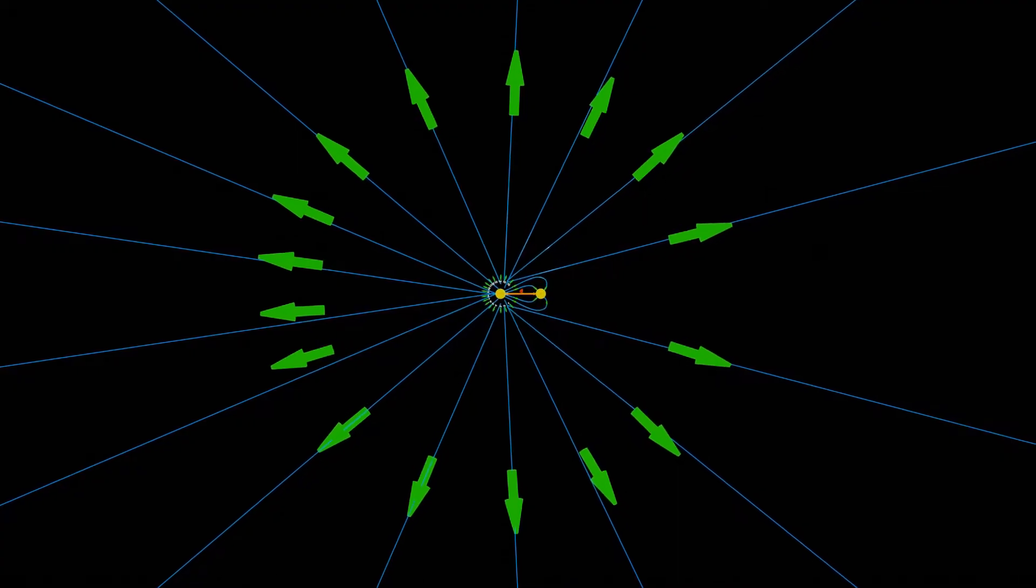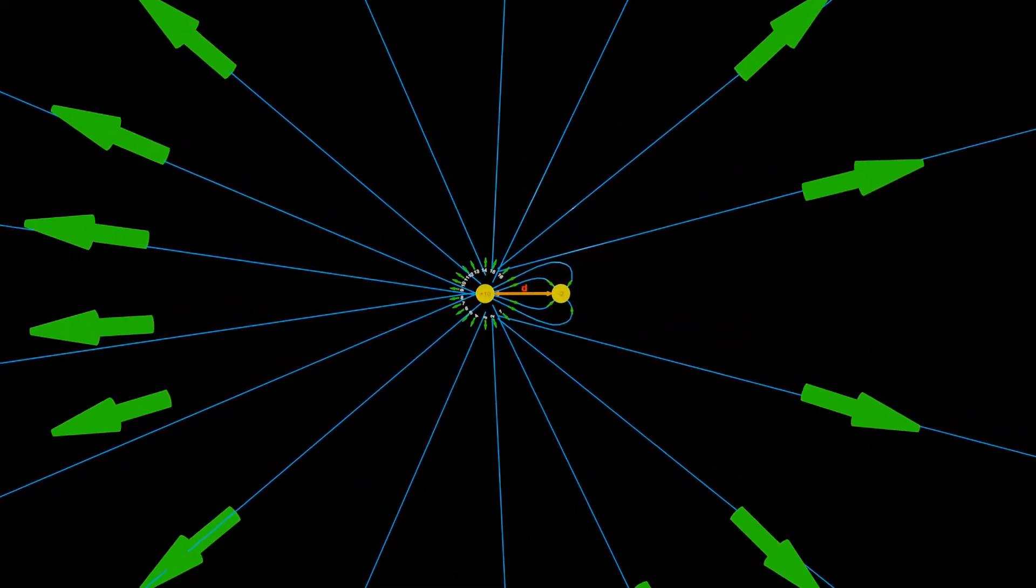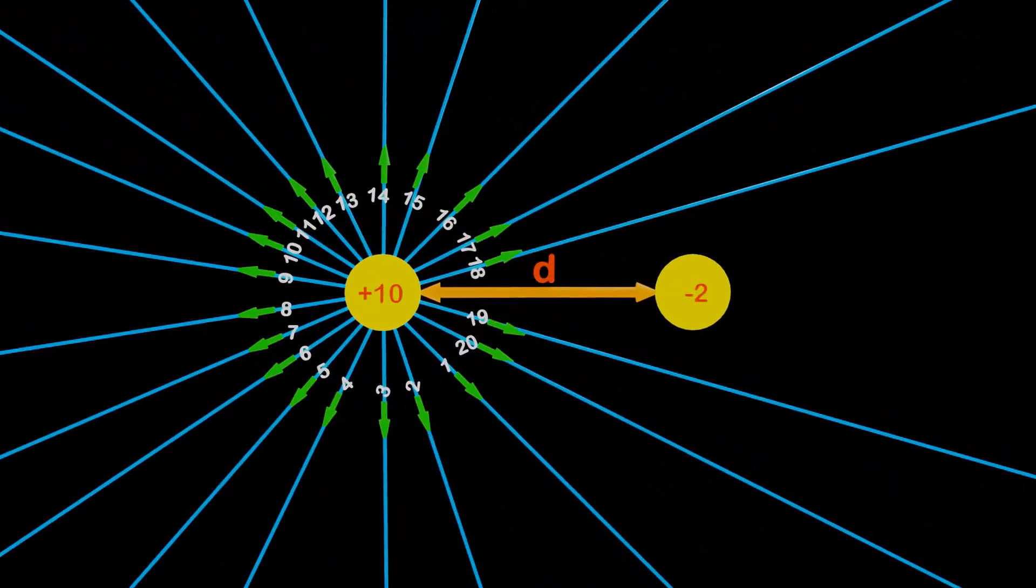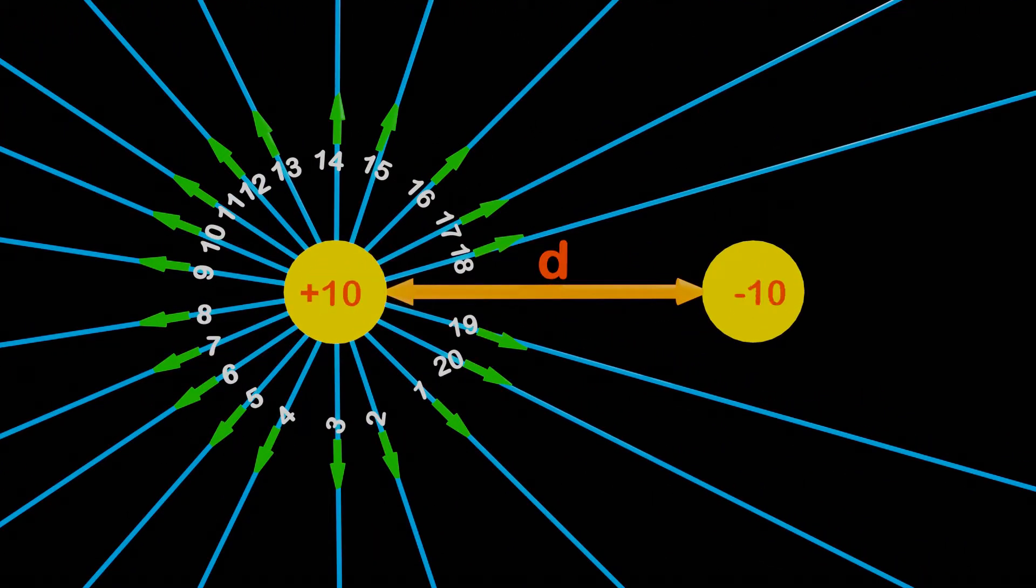Okay, but what happens if both charges are equal in magnitude and opposite in sign? That is, one is positive 10 and the other is negative 10. Please note that now the net charge is 0. Will there still be some electric field? Let's understand this.